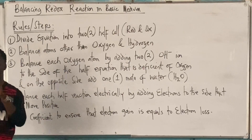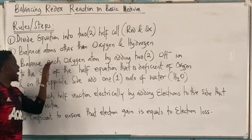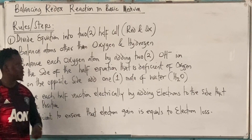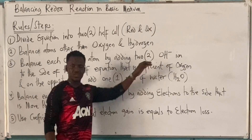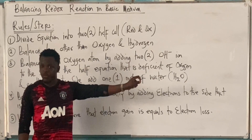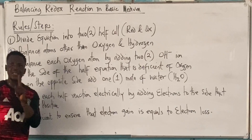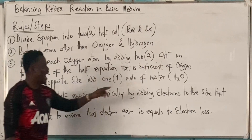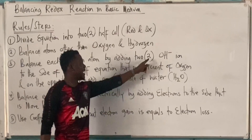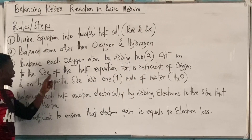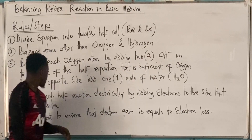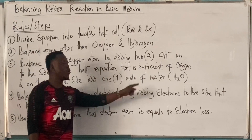Step three says: balance each oxygen atom by adding two OH⁻. In the case of acid medium, for every oxygen atom needed, we added water. Here, for every one oxygen atom that is needed, you add two OH⁻ to the side of the half equation that is deficient in oxygen, and on the opposite side, add one mole of water.